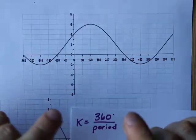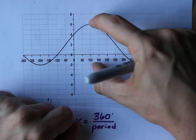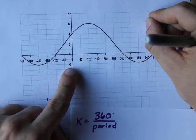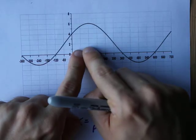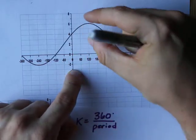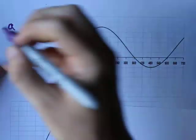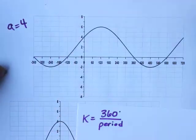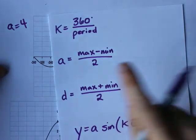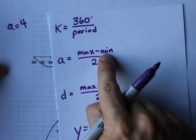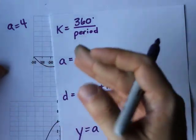The amplitude of this function is going to be half of its total height. This particular one goes down to negative 2 and up to 6. That's a difference of 8, and the amplitude is half of that — so the amplitude is 4. There is a formula: max minus min divided by 2. 6 minus negative 2 is 8, divided by 2 is 4. The amplitude is 4.